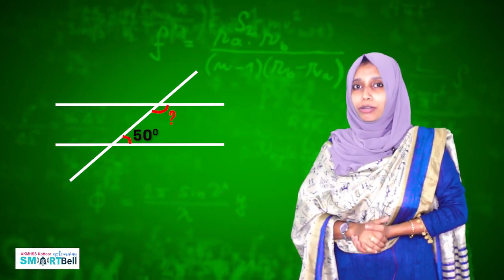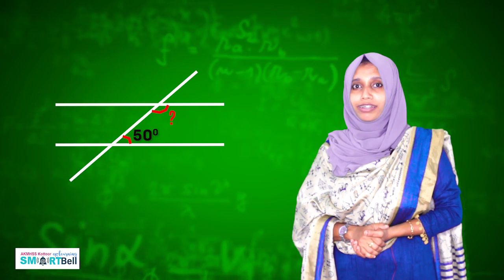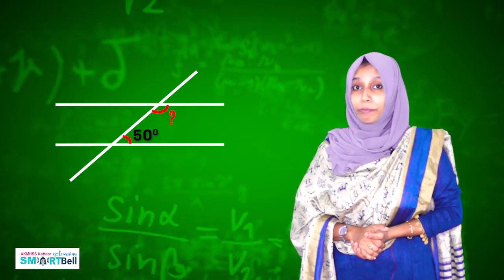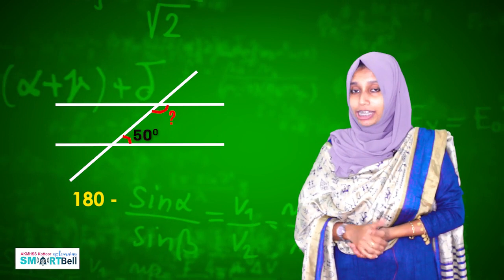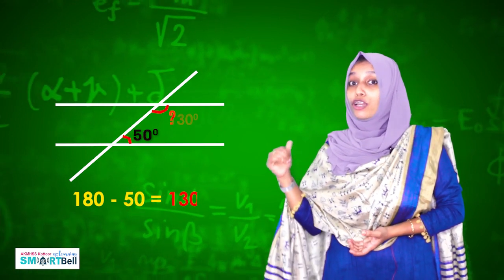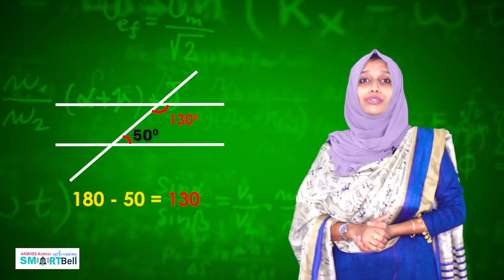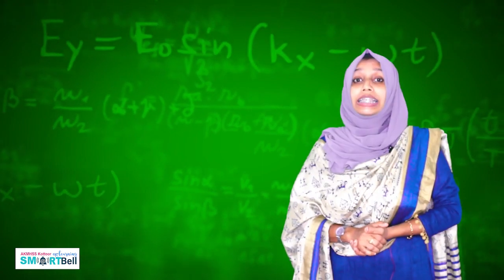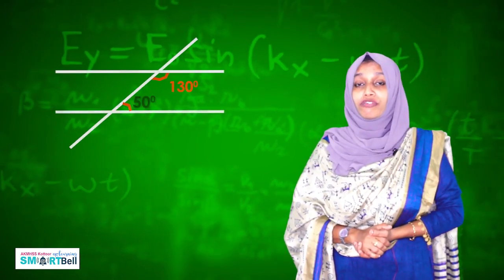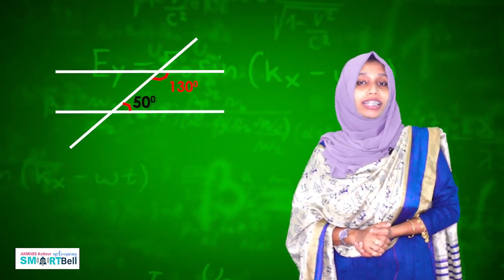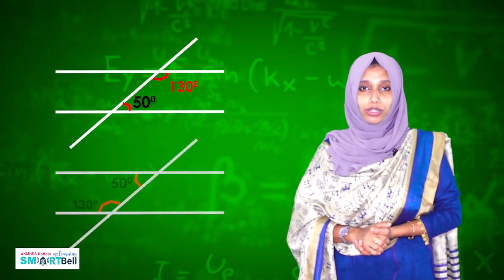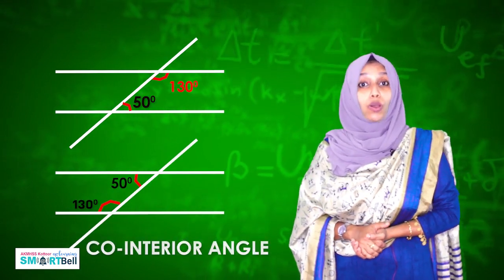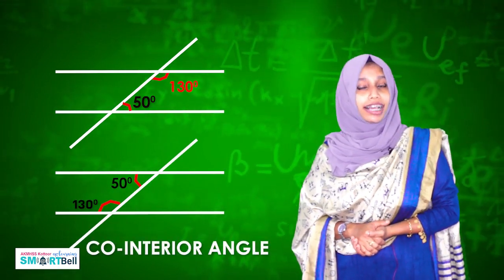So what is the marked upper angle in this figure? We know this is a supplementary angle, so the upper angle should be 180 minus 50, that's equal to 130 degrees. There is such a pair of supplementary angles on the left of the slanted line also. The angles in each of these two pairs are called co-interior angles.